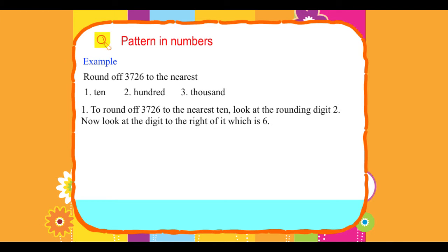1. To round off 3726 to the nearest ten, look at the rounding digit 2. Now look at the digit to the right of it, which is 6. Since 6 is greater than 5, increase the rounding digit by 1.